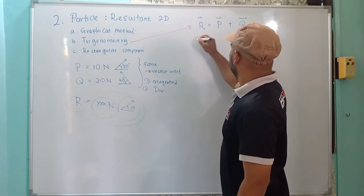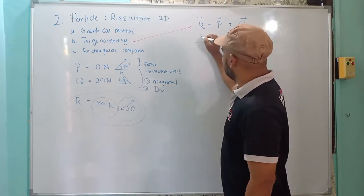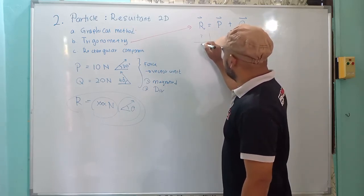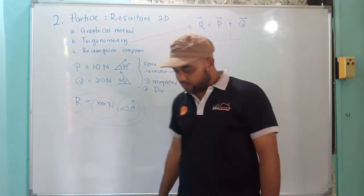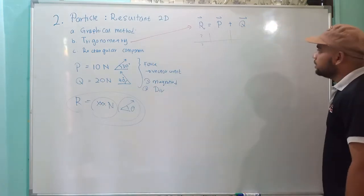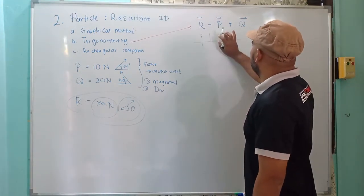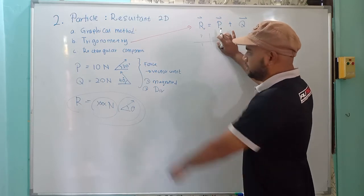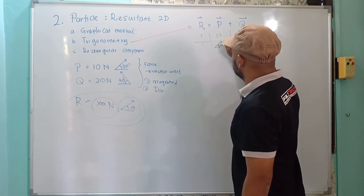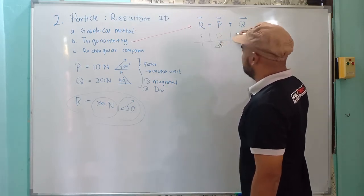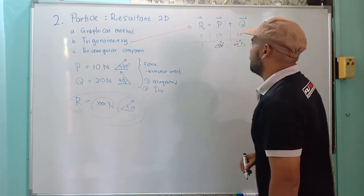So the first step: we have P which is 10 Newton, direction is 30 degrees. Q is 20 Newton, direction is 40 degrees.